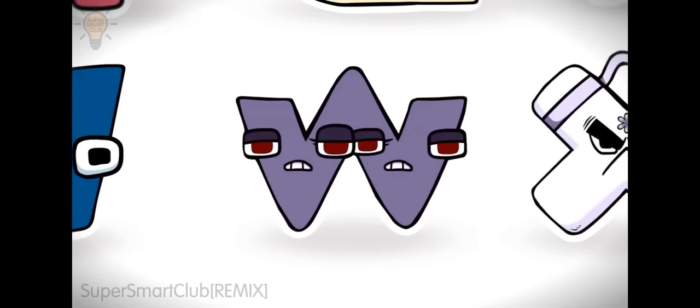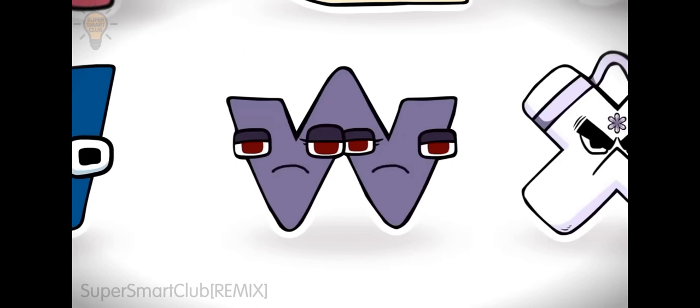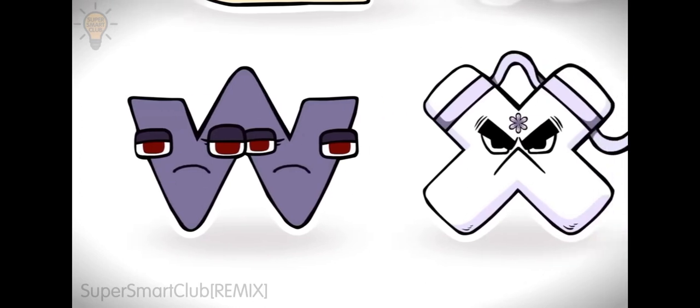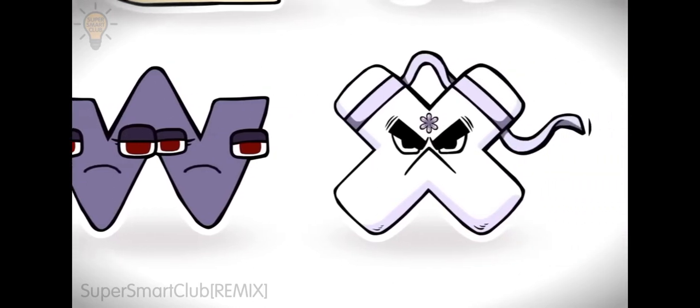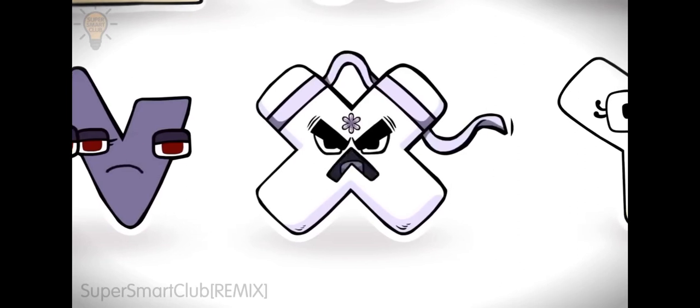W could be dark type because they have red eyes, and they could be ghost/dark. X could be fighting type because he's evil, but also psychic type.